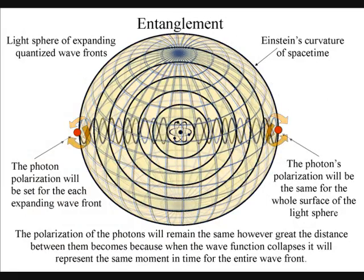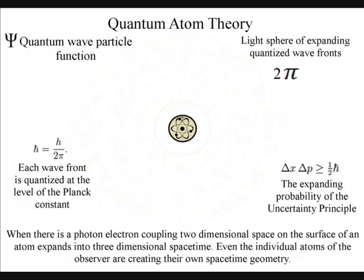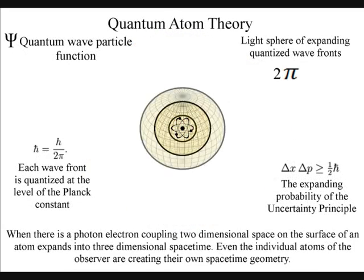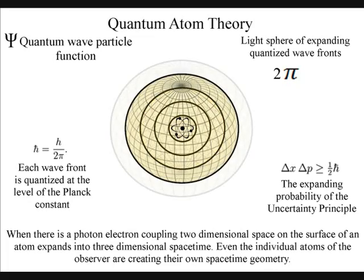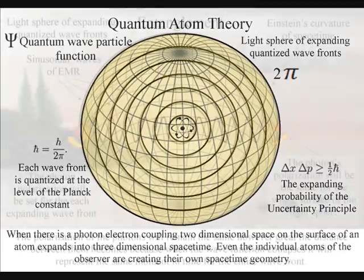We have the entanglement because the polarization will be set at the creation of each expanding wavefront. The wavefront will expand in the form of a light sphere, and the polarization will remain the same for the entire surface of the light sphere, no matter how large it becomes.